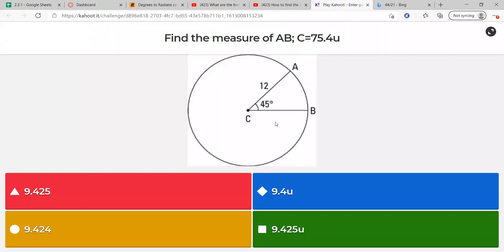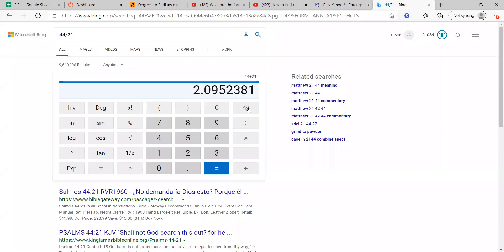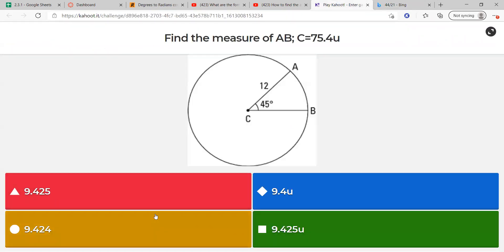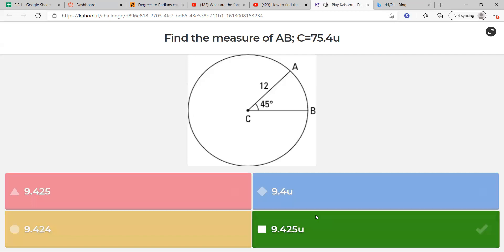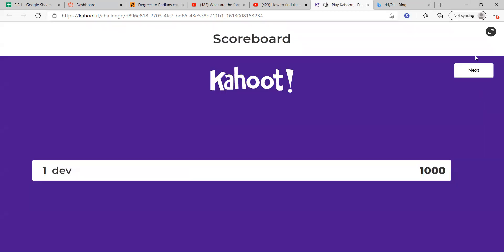So we'll do 3 times 3.14. 3 times 3.14? Yes sir. 9.42. Wait, we got 9.42. So which one would I put? Because I have 9.424, 9.425, 9.4, and 9.425u. I think we're going to go with one that says u because it's units. Let's go with the green one because it's more accurate. Yeah, we got it.